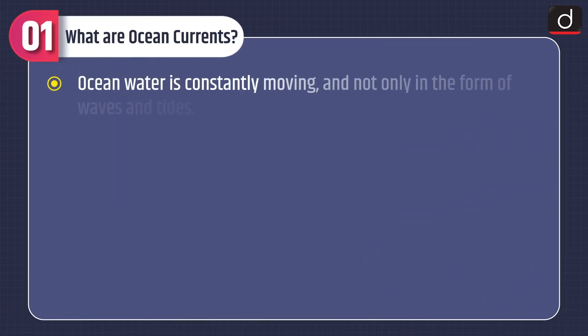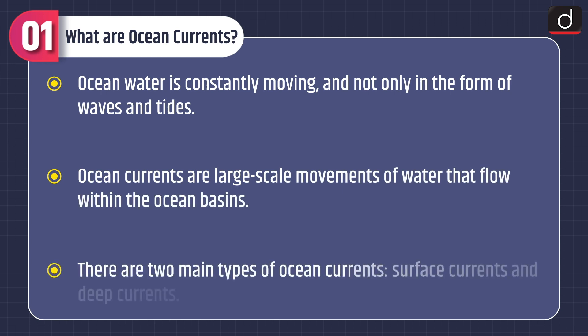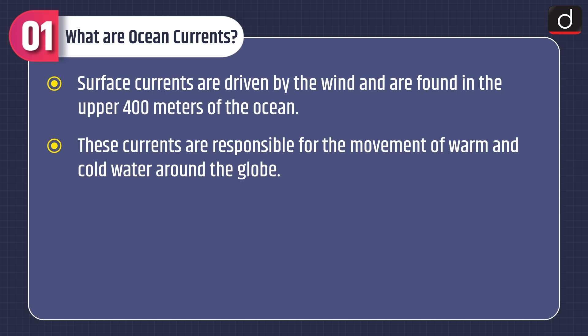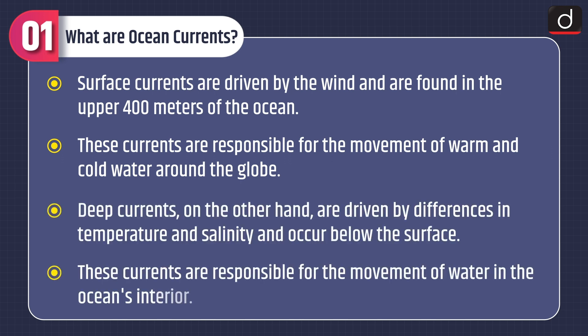Let's discuss what are ocean currents. Ocean water is constantly moving, not only in the form of waves and tides. Ocean currents are large-scale movements of water that flow within the ocean basins. There are two main types: surface currents, driven by the wind and found in the upper 400 meters of the ocean, and deep currents, driven by differences in temperature and salinity and occurring below the surface.